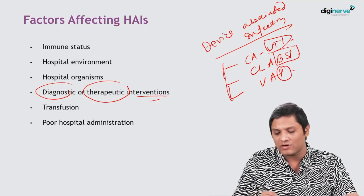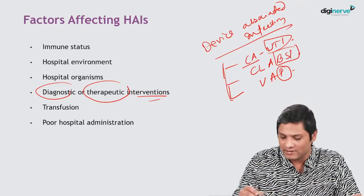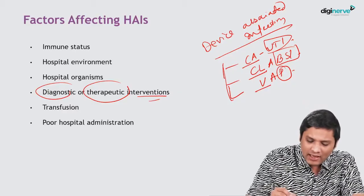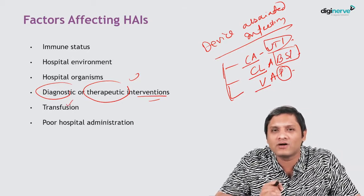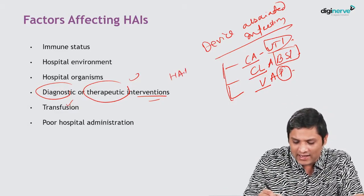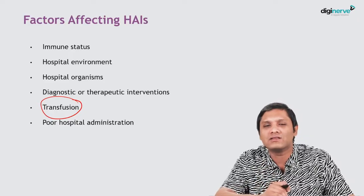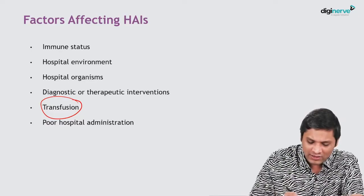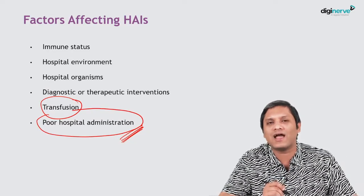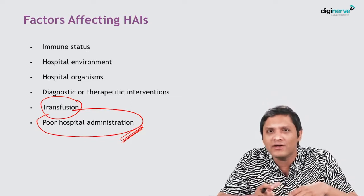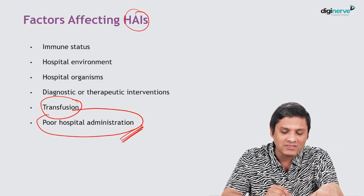These three diseases — UTI, bloodstream infection, and pneumonia — are associated with insertion of devices such as urinary catheter, central line, and ventilator respectively. Any diagnostic or therapeutic intervention gives organisms access to invade the body and cause HAI. Transfusion-transmitted infection is also important, as blood transfusion itself may carry organisms and transmit them. The most important risk factor is poor hospital administration, especially in government setups where patient load is high and nurse-to-bed ratio is very low, leading to much higher occurrence of hospital-acquired infection.